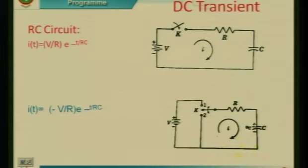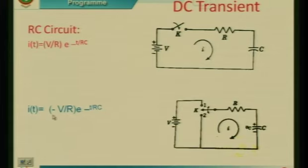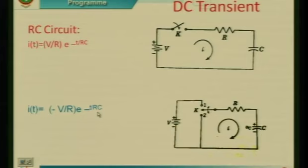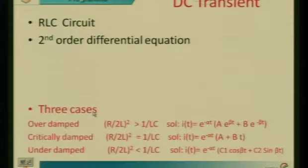The negative sign in the RC circuit indicates the current direction is opposite once the switch moves to position 2, because the capacitor charged with the top plate positive acts as a voltage source, driving current in the opposite direction. We also reviewed the total voltage equaling the forcing function or supply voltage, and examined voltage across resistor and inductor.